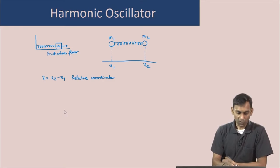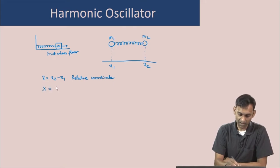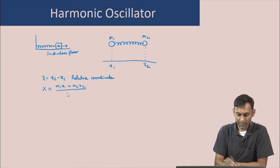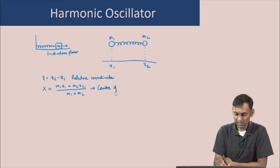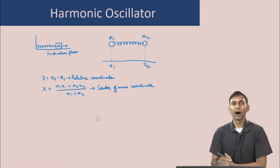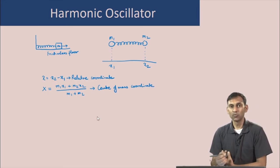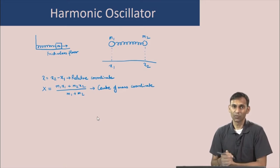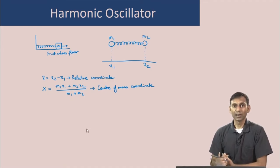For this system, there is also another important coordinate which is the center of mass coordinate. By definition, the center of mass coordinate is m1·x1 plus m2·x2, divided by m1 plus m2. Our goal is to write the Hamiltonian of this two-mass problem in terms of these new coordinates — the relative coordinate and the center of mass coordinate — and we will express x1 and x2 in terms of these.